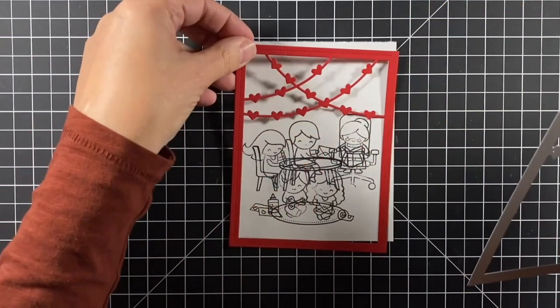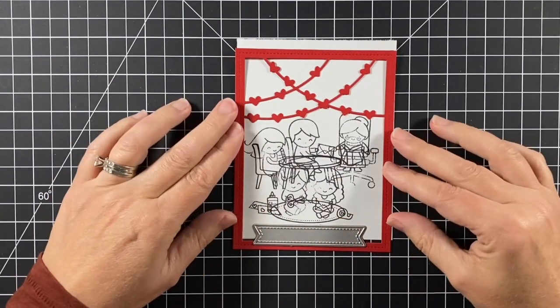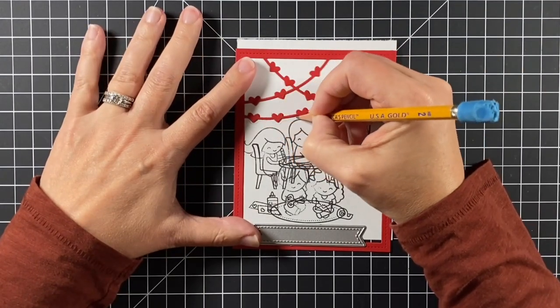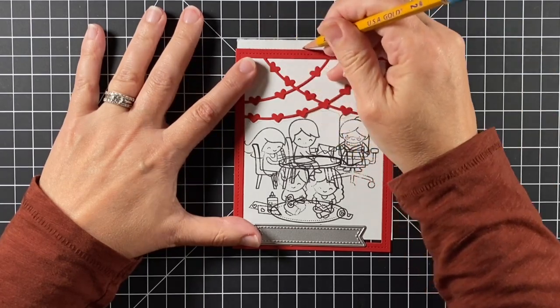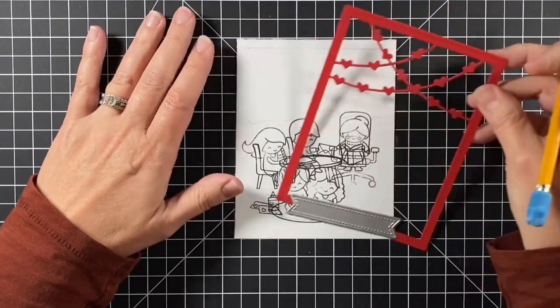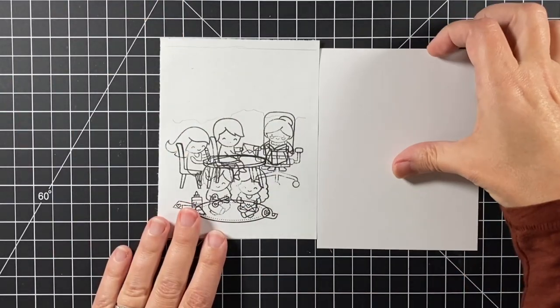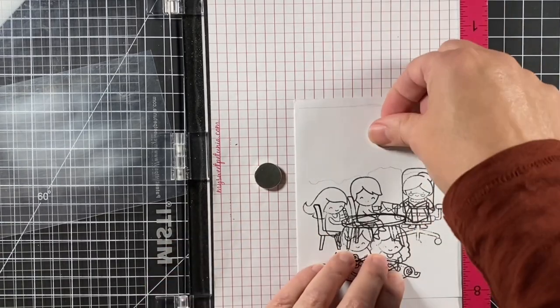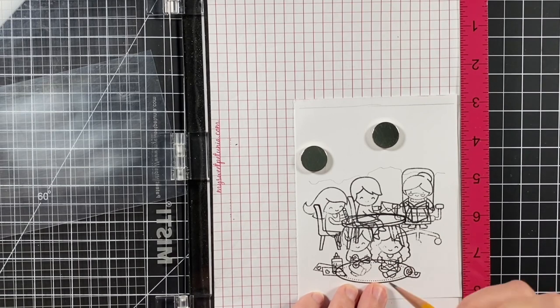I've cut out my heart garland backdrop out of chili pepper cardstock and I'm deciding exactly where these images should be stamped on my four and a quarter by five and a half inch piece of paper.